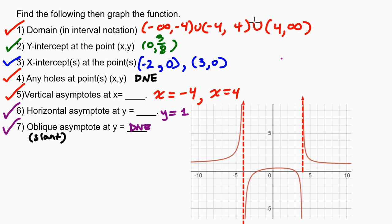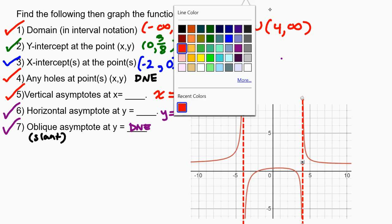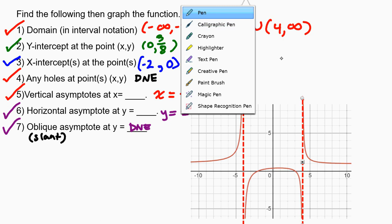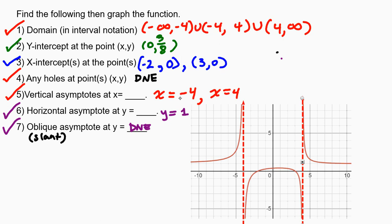x equals positive 4 is right here. And so, we can see that the function, the graphed function, is avoiding that line as well. So, that's looking good so far. So, I would say, hey, we got, so far, a good indication, because of the vertical asymptotes, that this might be the right graph for the function. What else can we look for?